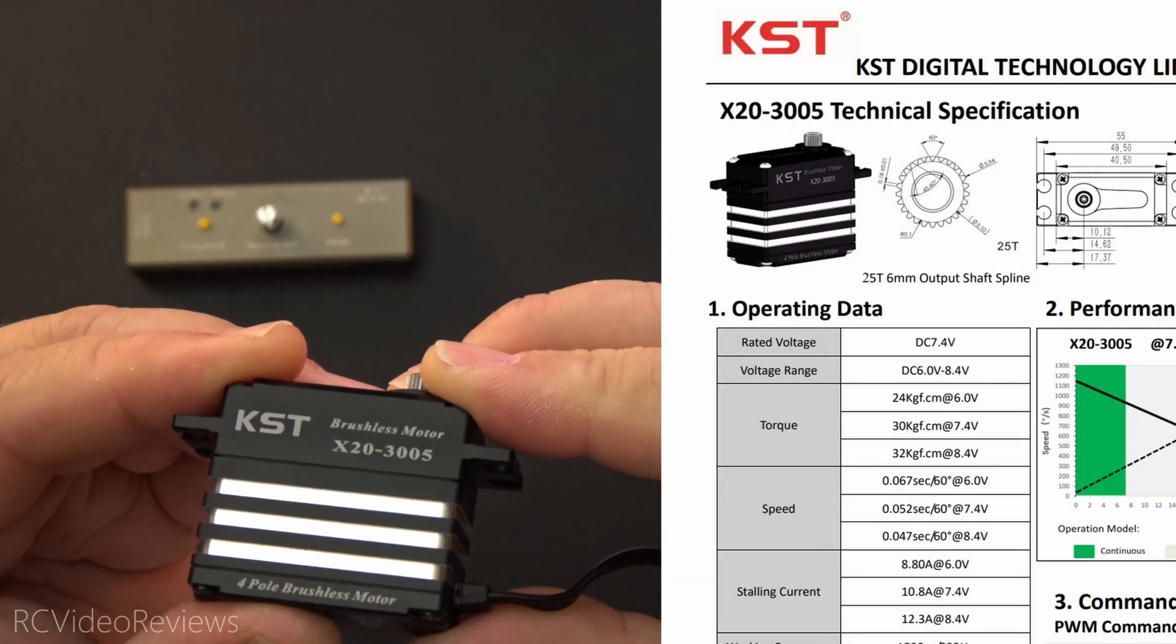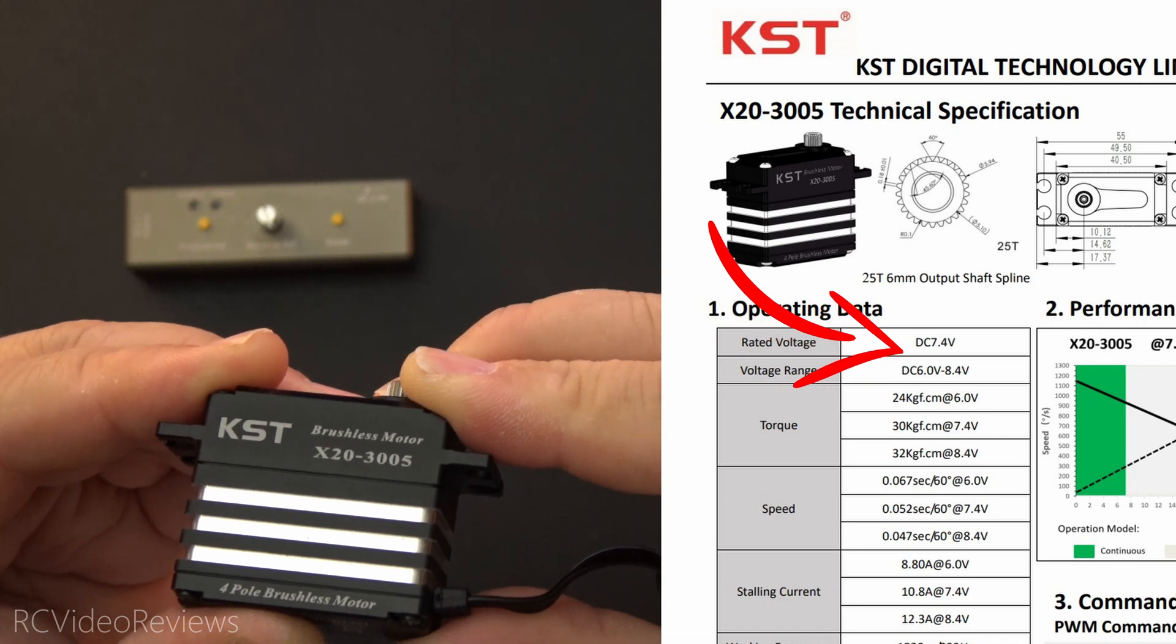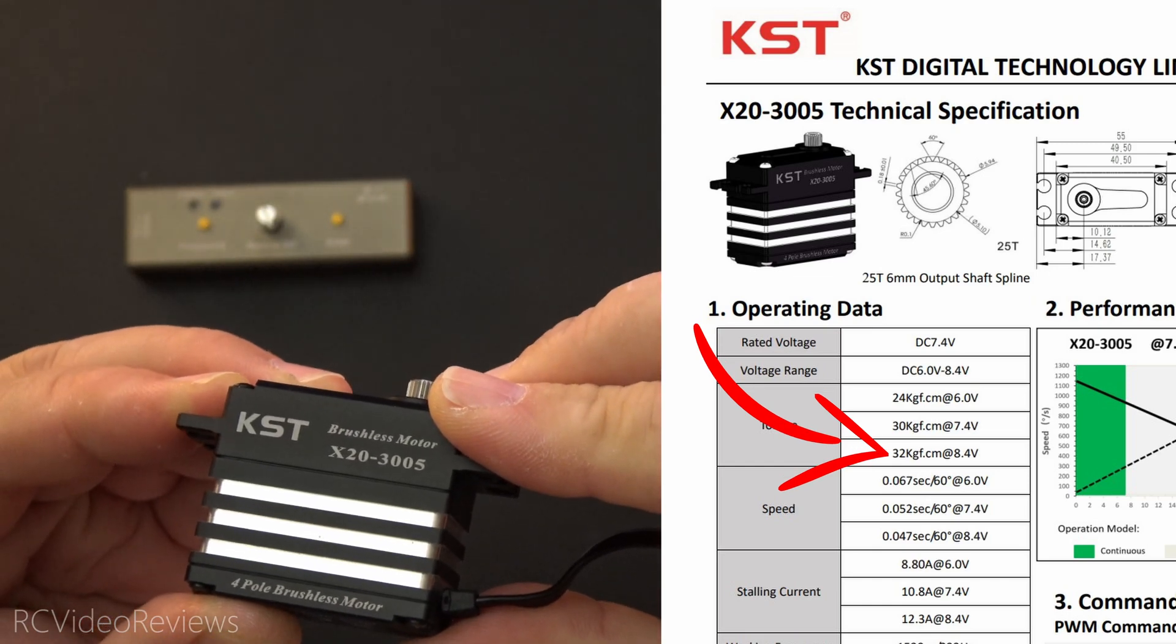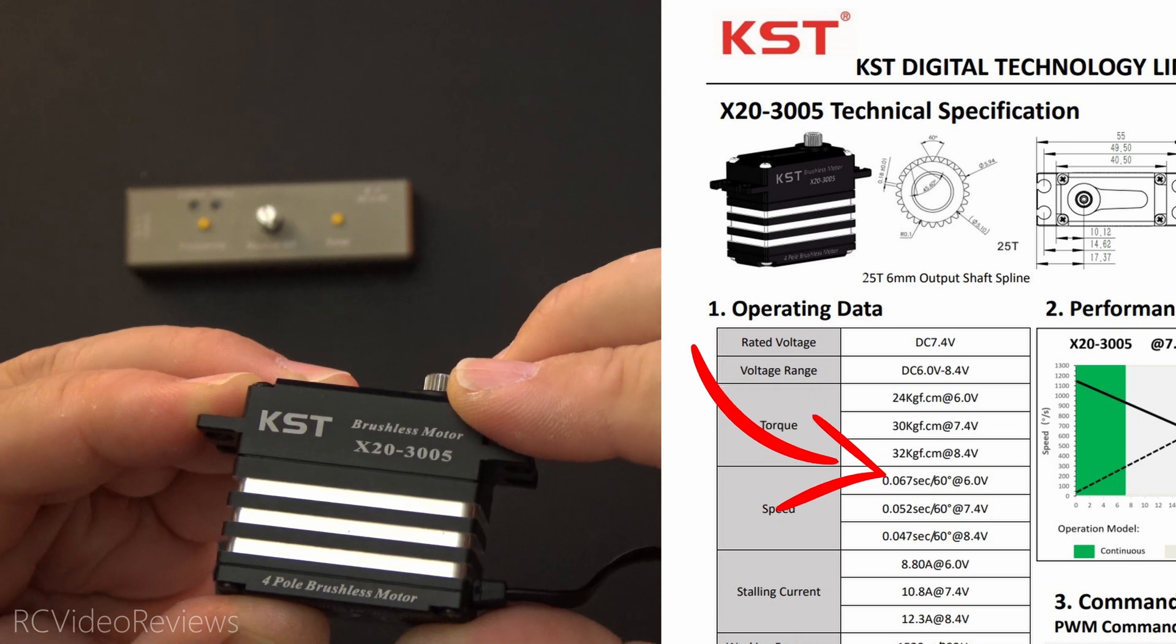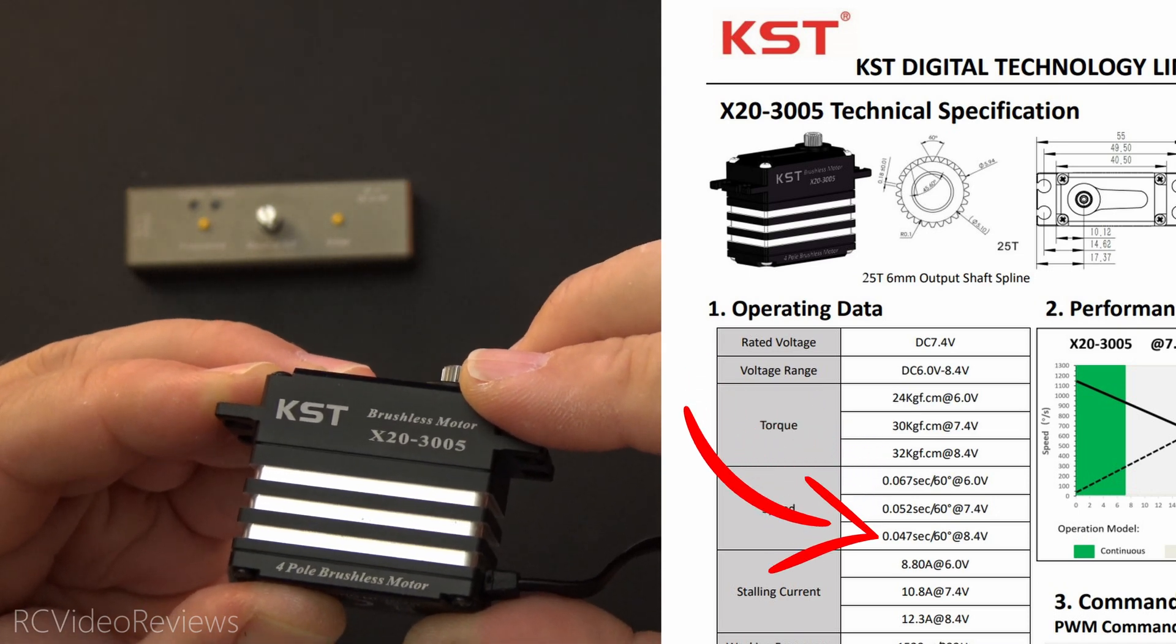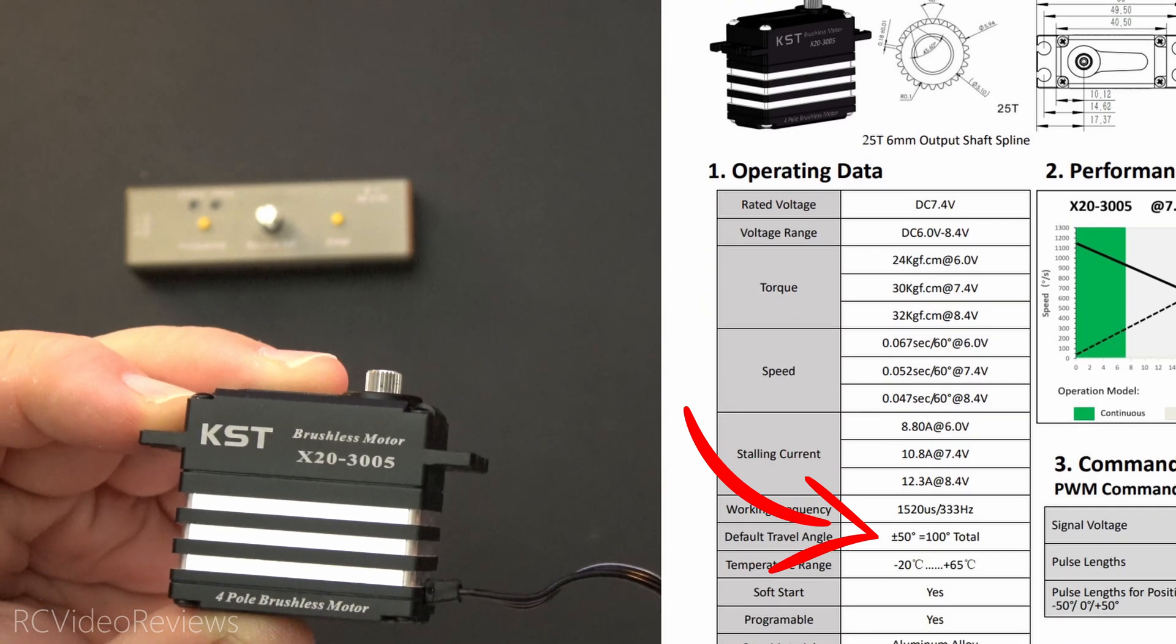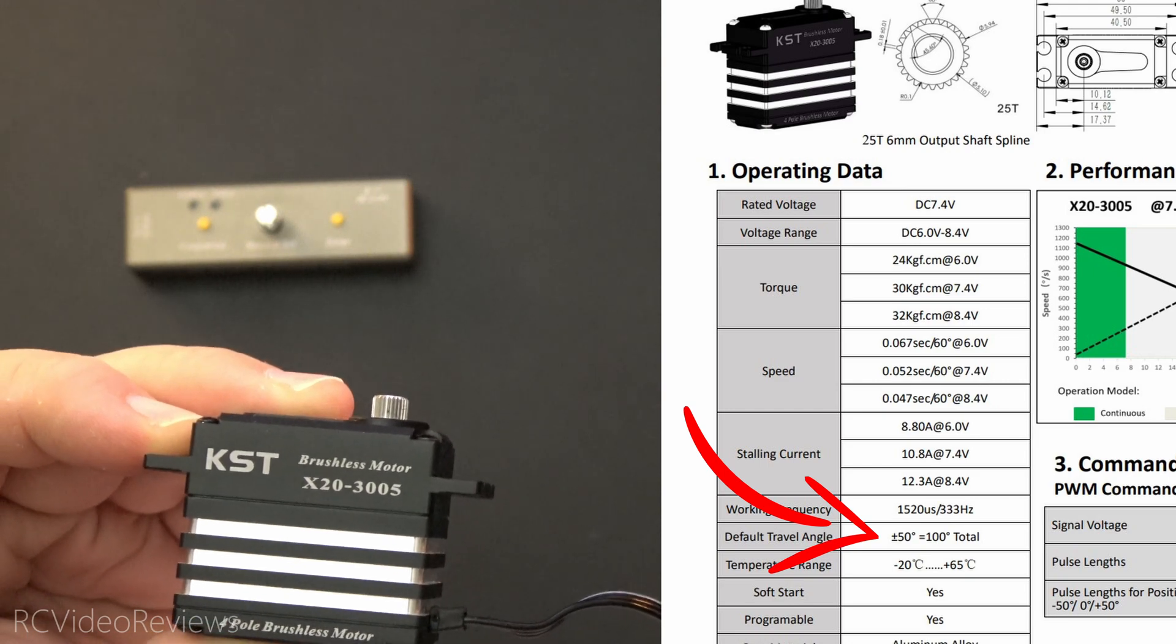The 3005s also have an operating range of 6 to 8.4 volts with a rated voltage of 7.4. On the power side, they're a little bit softer at 32 kilogram force per centimeter at 8.4 volts, and on the speed, they're actually a little faster, 0.047 seconds to cover 60 degrees at 8.4 volts. The default travel angle on this servo is 50 degrees plus or minus, so 100 degrees in total.